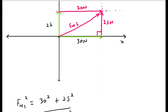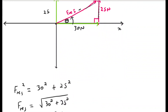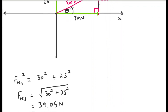The direction of F-res is not simply to the right or upward — it acts at an angle theta. We need to calculate the magnitude of theta to quote the direction of the resulting force. To calculate theta, we refer to the right-angle triangle. Since two sides are given, we will apply trigonometry and use a trig ratio to calculate theta.